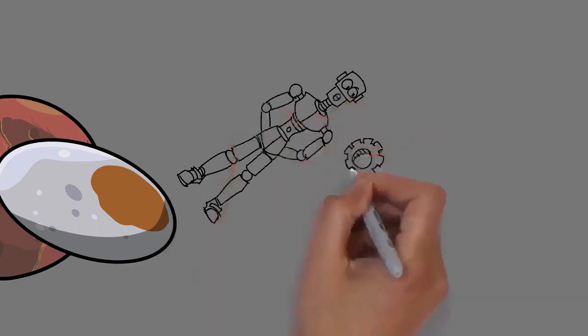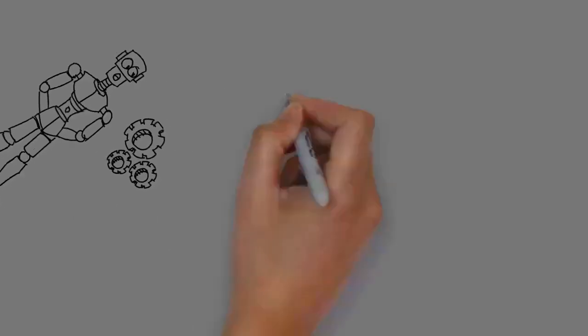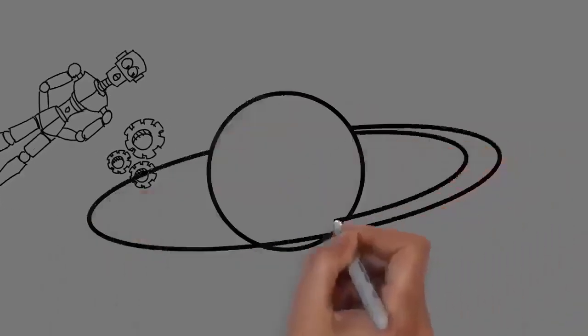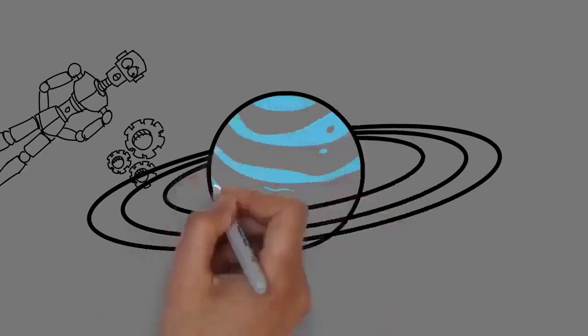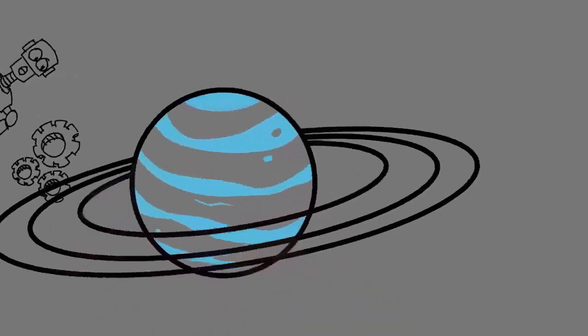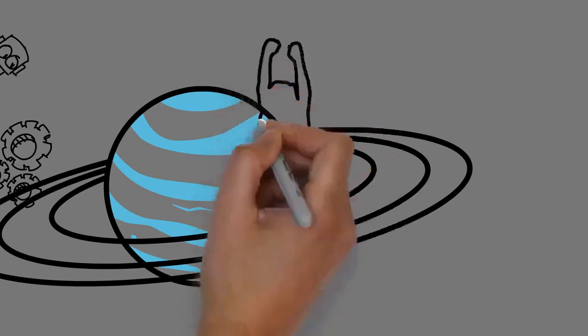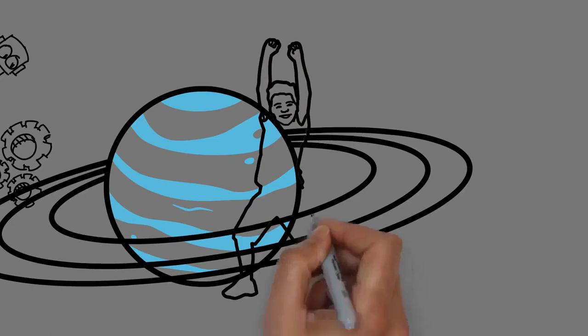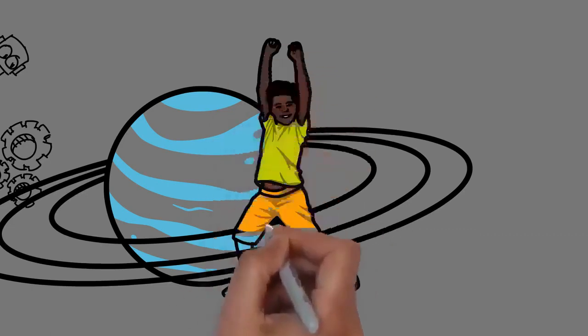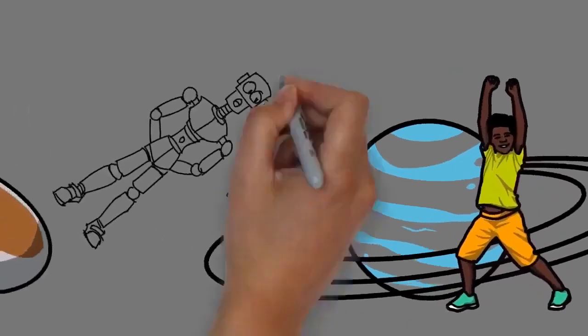Earth has a liquid outer core that generates a magnetosphere capable of deflecting most of the destructive solar winds and cosmic radiation. Earth has a dynamic atmosphere, which sustains Earth's surface conditions and protects it from most meteoroids and UV light at entry. It has a composition of primarily nitrogen and oxygen. Water vapor is widely present in the atmosphere, forming clouds that cover most of the planet.